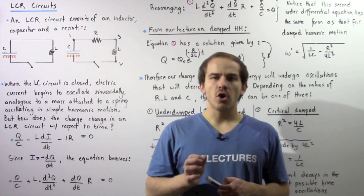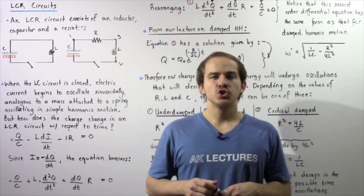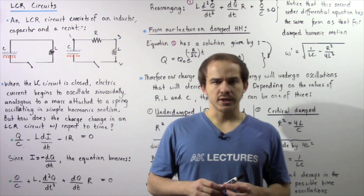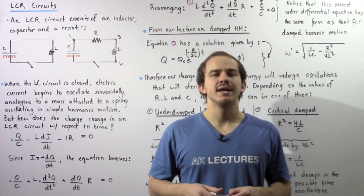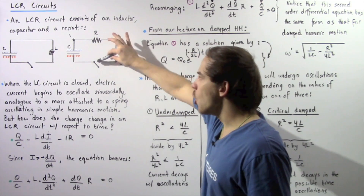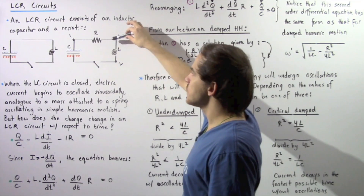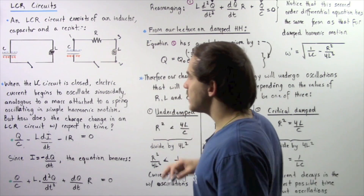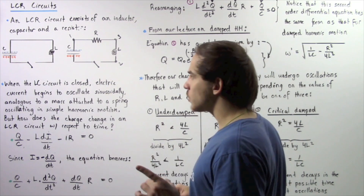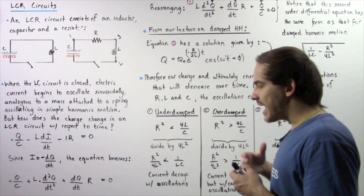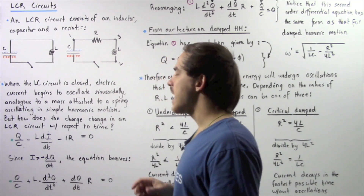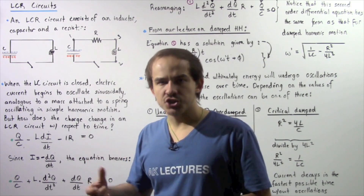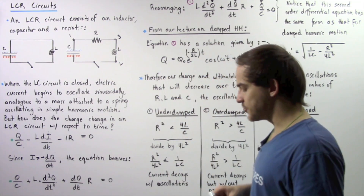In this lecture, we're going to examine an LCR electric circuit and look at what happens to our electric current over time. An LCR electric circuit is a circuit that contains a resistor, a capacitor, as well as an inductor. We have an open circuit with the switch in the open position, meaning no electric current flows and all the charge is stored on the plates of the parallel plate capacitor.